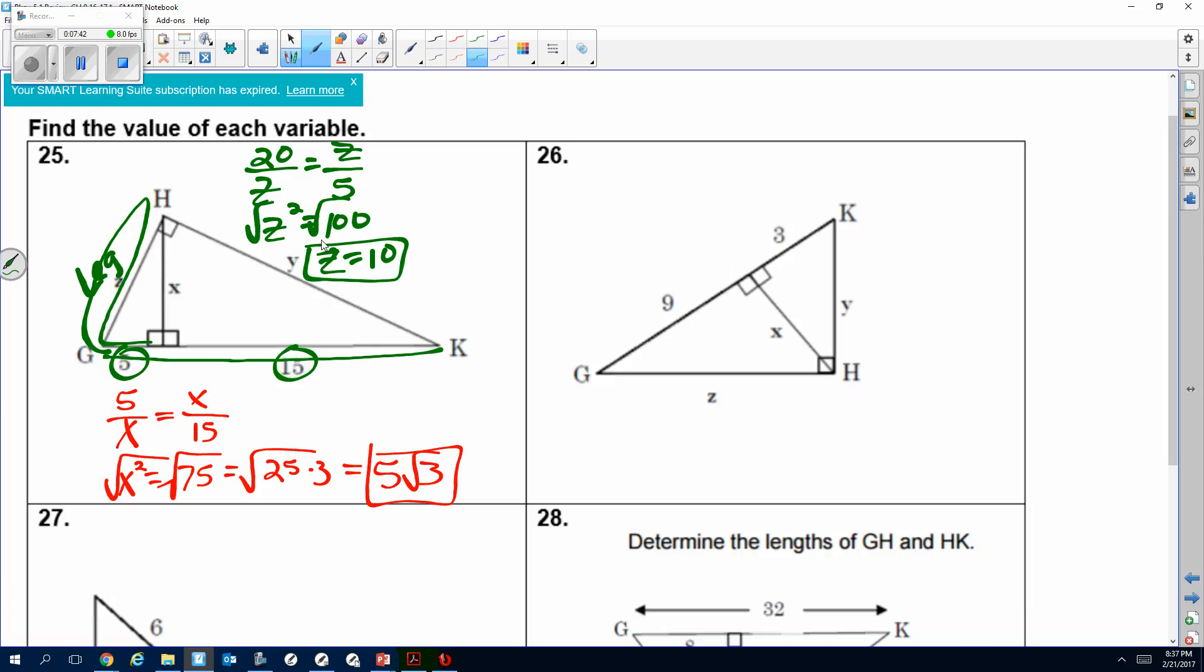Now I have to do the boomerang on the right side because y is also a leg. So now I'm going G to K all the way to y, then coming back and stopping at 15. So there's boomerang to the right side. So that would be 20 is to y as y is to 15. And then we're cross multiplying here, and we get y squared equals 300.